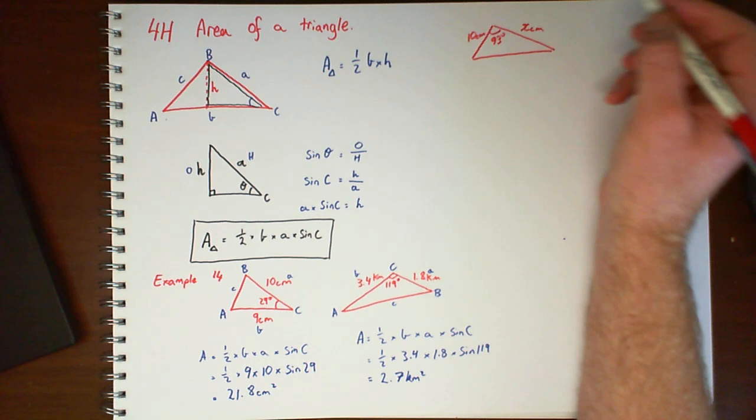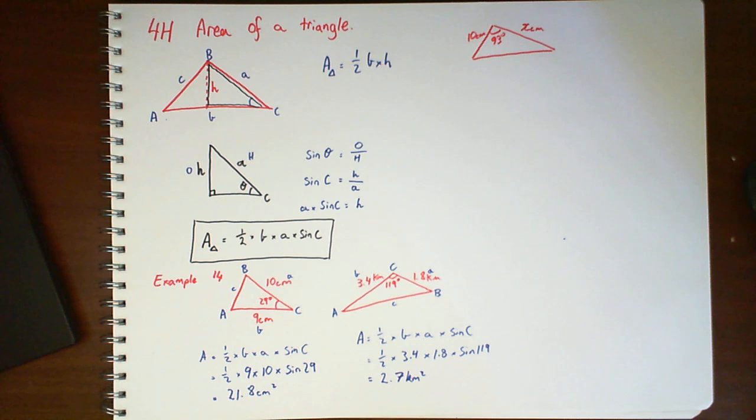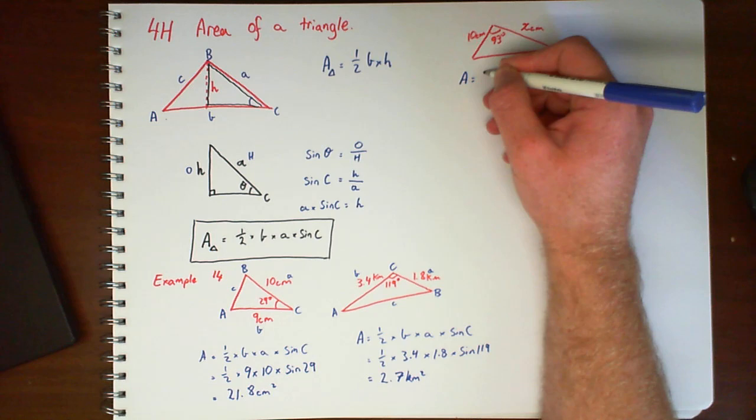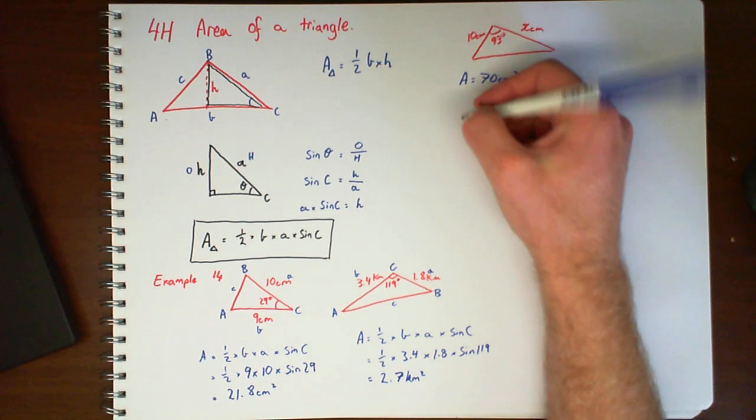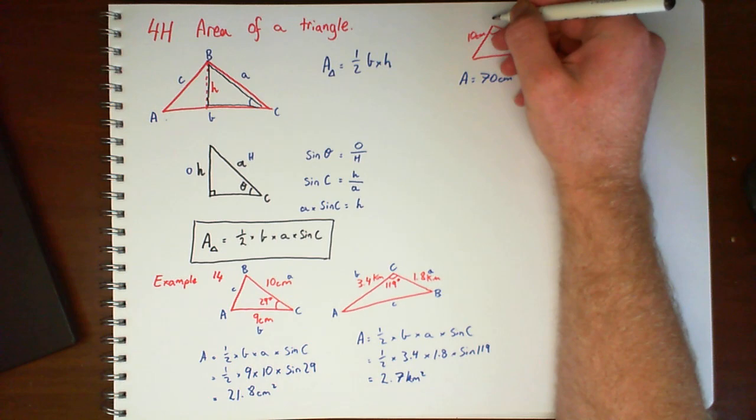So if we find the value of X to 2 decimal places, providing that we know the area of the triangle. And let's say the area of the triangle was 70 cm squared. So similarly, or similar to the past example, first thing is label your diagram.